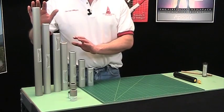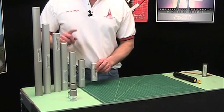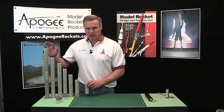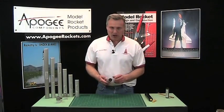As you can see, the Cesaroni cases come in several different sizes from a one grain, two grain, three grain all the way up to six XL grain. So what does that mean, the number of grains?